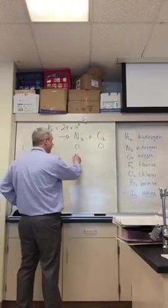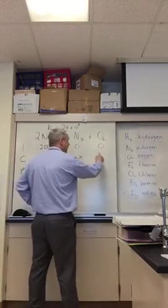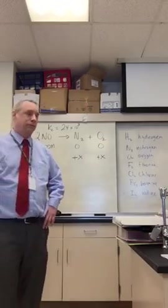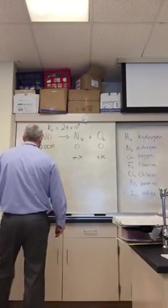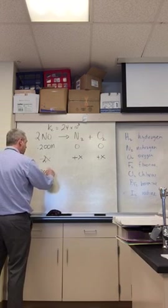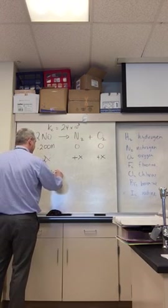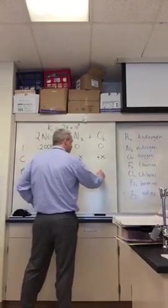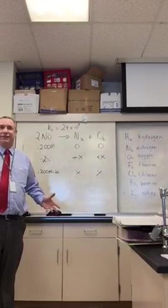And then these, of course, are appearing as positive X and positive X. Now, that means that this one must be 0.200 molar minus 2X. This one must be X, and this one must be X. Are you with me on this?